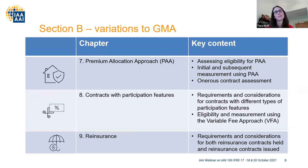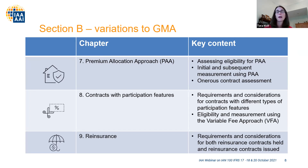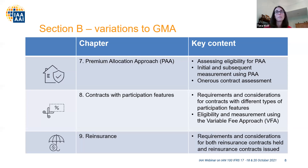Chapter seven gets into the shortcut for short duration contracts — the Premium Allocation Approach, or PAA. To the extent that contracts exist on the property casualty side that are one year in nature, or group life contracts that are also one year in nature, there is a possibility of not building out a full-fledged cash flow projection model. You can apply to be eligible for the PAA as a shortcut model. The chapter covers ideas around eligibility, initial recognition, subsequent measurement, and some DAC balance considerations. Quite a useful chapter for property casualty folks, and some life folks as well.